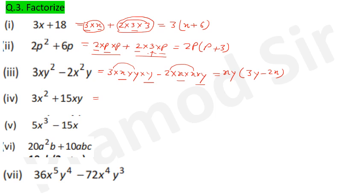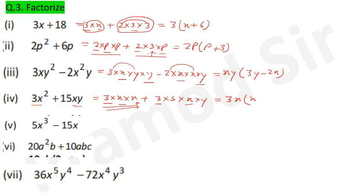Question 4: 3x² + 15xy. Write 3×x×x + 3×5×x×y. What is common: 3 and one x, so take 3x as common. Left in the first term: x. Left in second term: 5y. Answer: 3x(x + 5y).